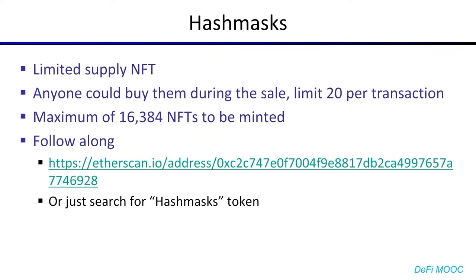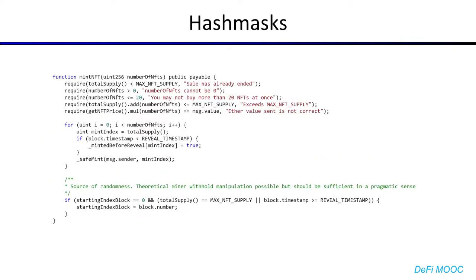The second example is the Hashmasks NFT project. This is a limited supply NFT — there was a maximum of 16,384 of them to be minted, and anyone could mint them by purchasing during the sale with a limit of 20 per transaction. Here's the mintNFT function. We can see that it performs a few checks: checking that the supply cap hasn't been reached, checking that the user is minting a correct number of NFTs, checking that the user won't exceed the supply cap after minting, and checking that the user is paying the right amount of Ether. These are all correct checks, and then we just perform a simple mint of all the NFTs requested.